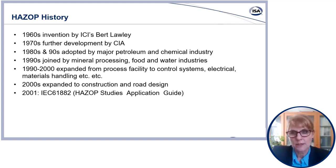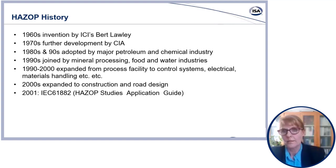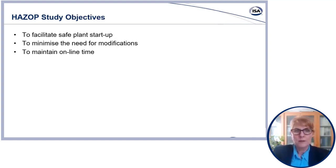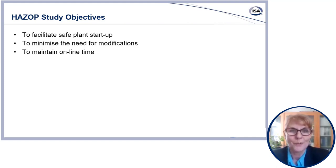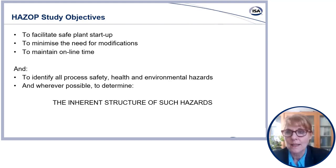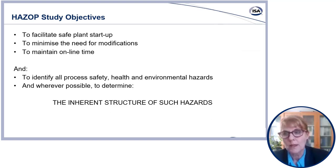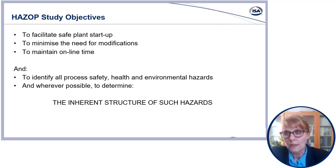Whilst there's been improvement in HAZOP study efficiency and quality over the years, the basic methodology has remained unchanged. The objectives of a HAZOP study are to facilitate safe plant start-up, minimise the need for modifications, and maintain online time. They also include identifying all safety, health and environmental hazards, and wherever possible, determining the inherent structure of a new hazardous event — which is useful in determining the critical control measures for either prevention or mitigation safeguards.